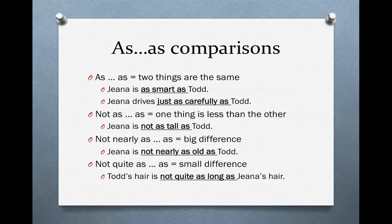You could also say, Gina drives just as carefully as Todd. Notice the addition of the word 'just.' We can simply use 'as' for comparisons or we can add 'just' — the meaning is exactly the same. In both cases, we're indicating that two things are being compared and those two things are the same. So Gina drives carefully and Todd drives carefully. It's exactly the same.